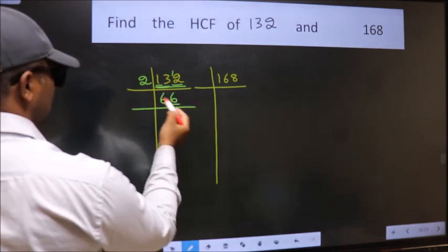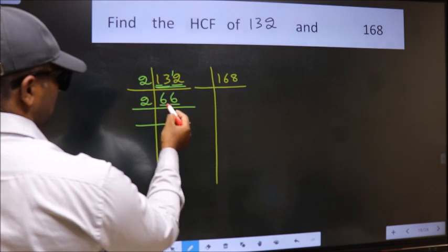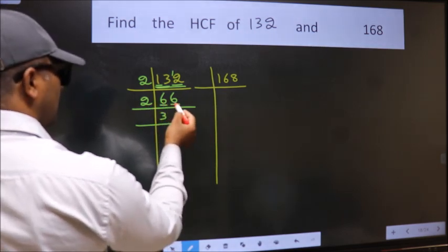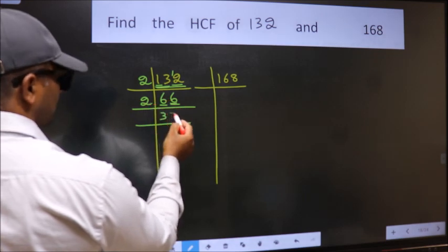Last digit 6, even, so take 2. First number 6, when do we get 6 in 2 table? 2 times 3 is 6. The other number 6, when do we get 6 in 2 table? 2 times 3 is 6.